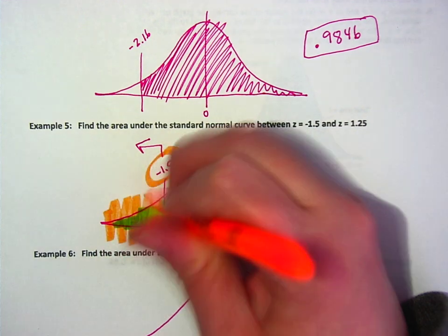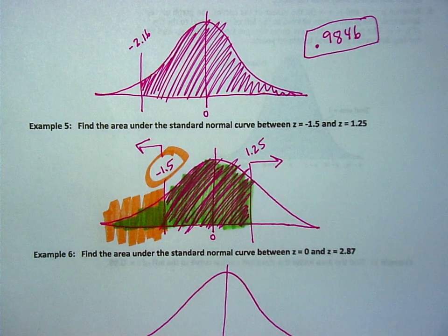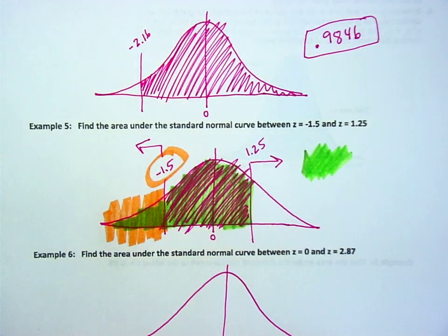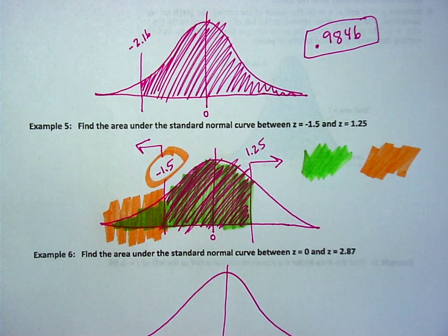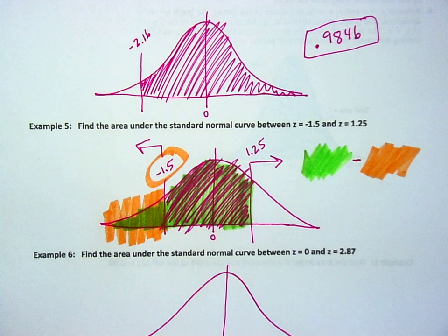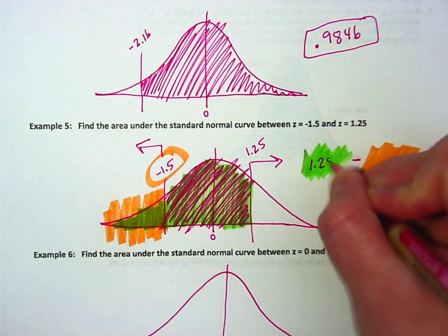But if I look up this one, that would be this. So if I take the green and then I subtract away the orange, I'd get my answer, which might be a little less time-consuming than Mason's idea, but again, your idea would work.